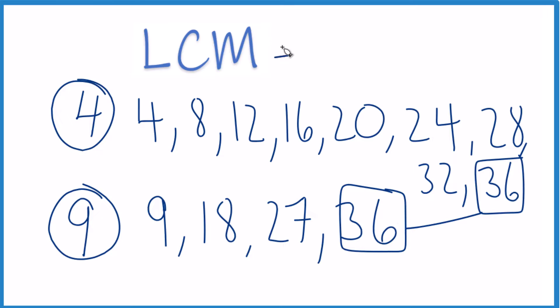So in answer to our question, the LCM for 4 and 9 is 36. There are other ways you could do this, but you'll end up with the same answer.